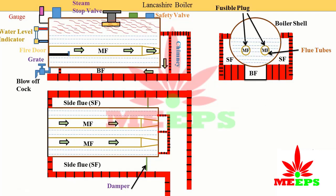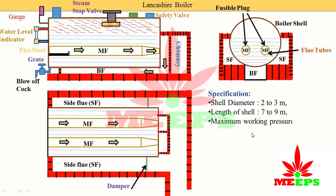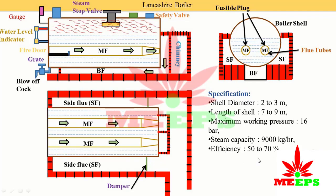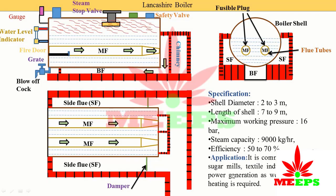Specifications of the Lancashire boiler: shell diameter is 2 to 3 meters; length of shell is 7 to 9 meters; maximum working pressure is 16 bar; steam capacity is 900 kg per hour; and efficiency is 50 to 70 percent. It is commonly used in sugar mills and textile industries where both power generation and process heating are required.